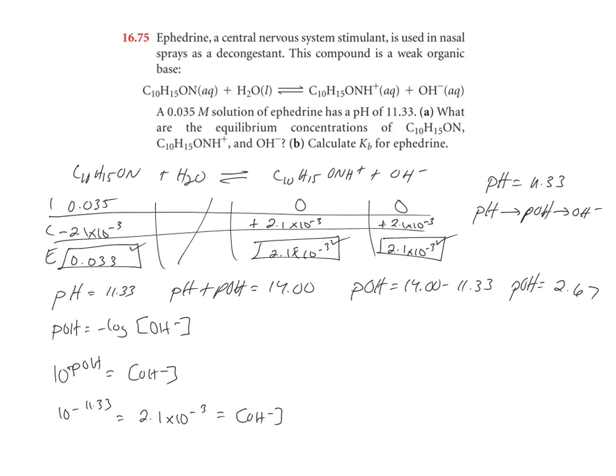Part B says calculate Kb for ephedrine. Kb is going to be your products over your reactant. It's going to be 2.1×10⁻³ squared over 0.033. Use the unrounded numbers for both of these, please. And then we get 1.4×10⁻⁴.